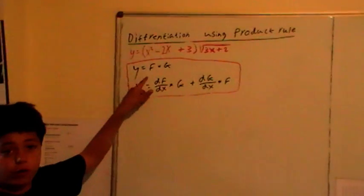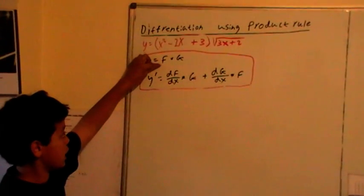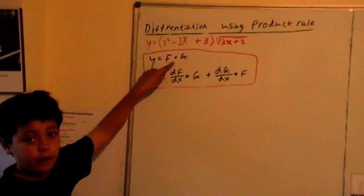This is the general form of a product function. The first function, f, times the second function, g.